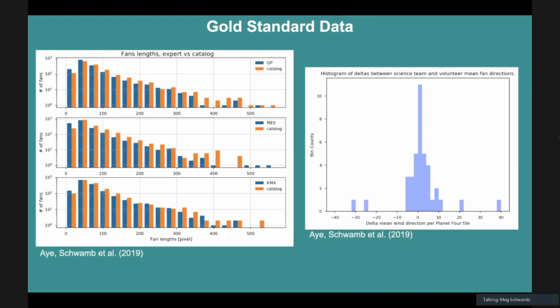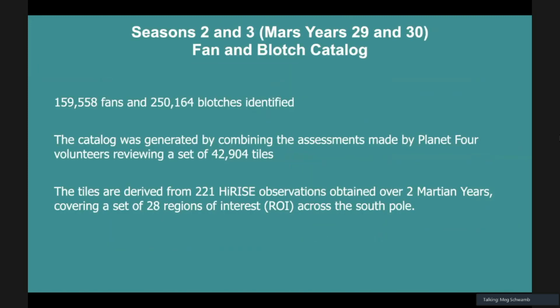On the right, I can show you, that's looking at fan lengths. What about directionality? Here is looking at a histogram showing the difference if you take the average direction of these fans in these small sub images and you compare what the expert had to that image versus the catalog. We're matched within about 10 degrees. We think that's pretty good proof that combining the assessments of multiple non-expert volunteers with this online citizen science project is getting us results that we can actually use for science.